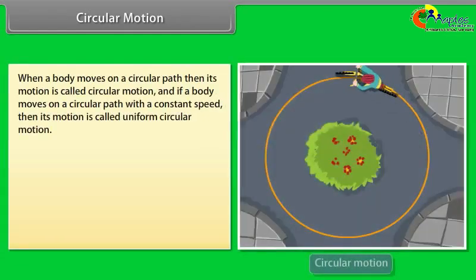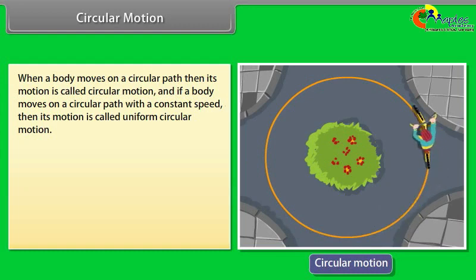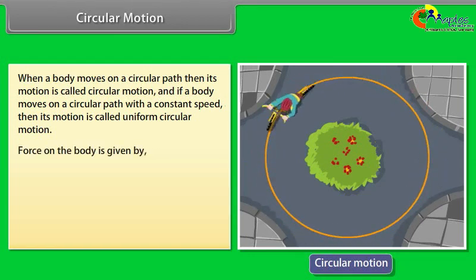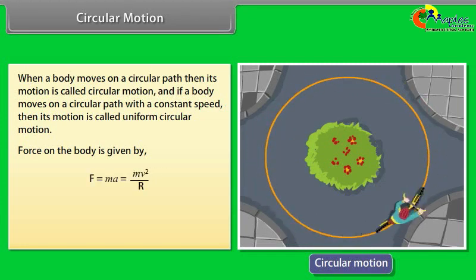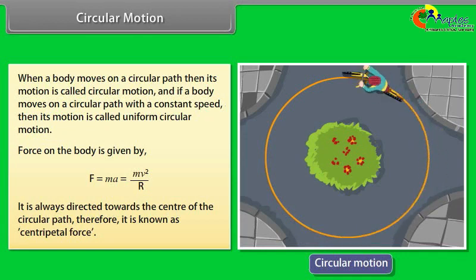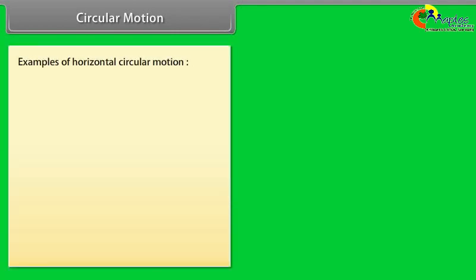When a body moves on a circular path, its motion is called circular motion. If it moves on a circular path with constant speed, it is called uniform circular motion. The centripetal force is given by F = ma = mv²/R, always directed towards the centre of the circular path.